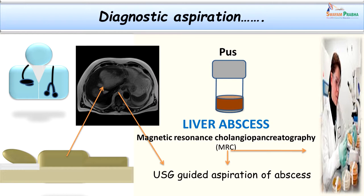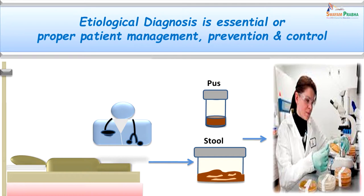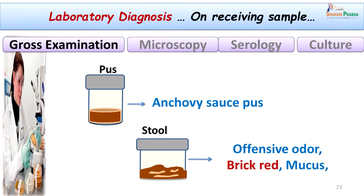A diagnostic aspiration was done as we noticed a space-occupying lesion in the liver. It was suggested that aspiration be done from the side walls of the lesion so that we could recover the parasites — otherwise we would miss them. Once the pus was collected, it was sent to the laboratory. Even though we made a clinical diagnosis of liver abscess, confirming the etiology and pathogen is very important because we need to target specific therapy for control and prevention. Both pus and stool specimens from Babu were sent to the laboratory.